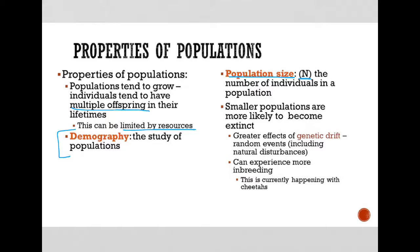Smaller populations are more likely to become extinct for a couple of reasons. One of which we've talked about, there are going to be greater effects of genetic drift, sort of random events including natural disturbances. And of course, this big one is that they can experience more inbreeding. And this is what's currently happening with cheetahs. The populations are so small that individuals who are in some way related to each other end up mating.